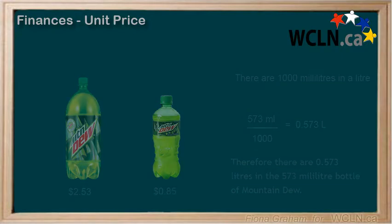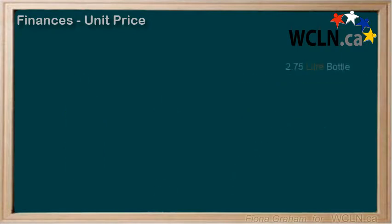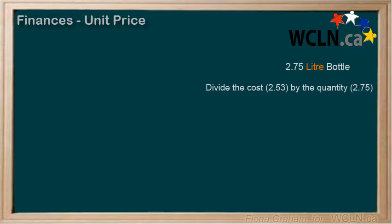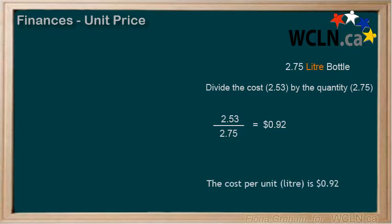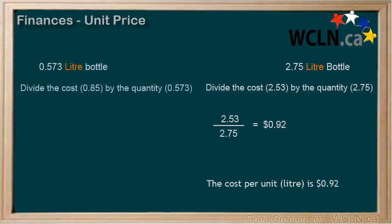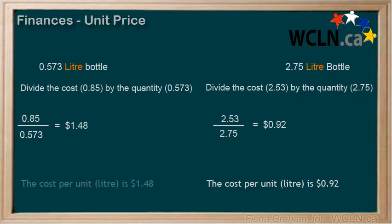We can now compare the prices. For the 2.75-liter bottle, we divide its cost of $2.53 by 2.75 liters, which equals $0.92 per liter. For the 0.573-liter bottle, we divide its cost of $0.85 by 0.573 liters, which equals $1.48 per liter. That's a lot more expensive than the $0.92 per liter if you buy the bigger bottle.